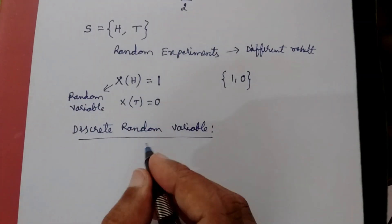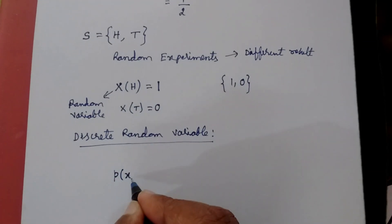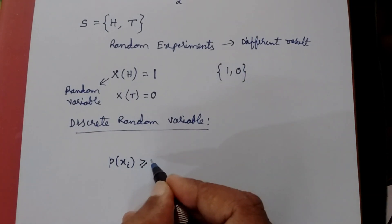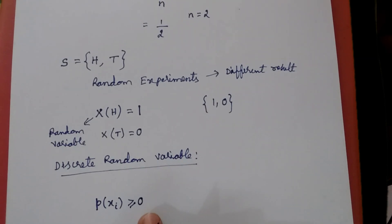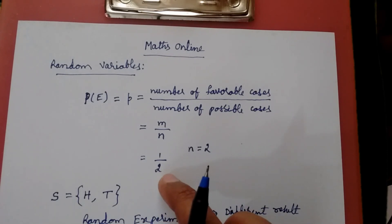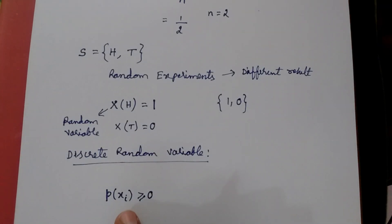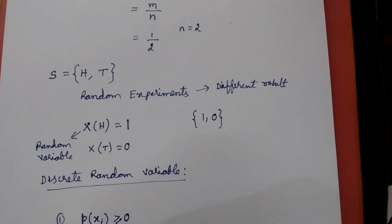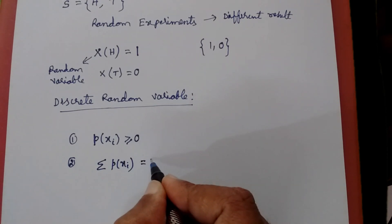Now suppose I represent the probability of the random variable. Suppose the different random variables are x1, x2, x3, and so on. The probability of a random variable will always be greater than or equal to zero. For example, when tossing a coin, the probability of getting a head is 1/2, which is greater than zero. Also, the sum of all the probabilities will always be equal to 1.